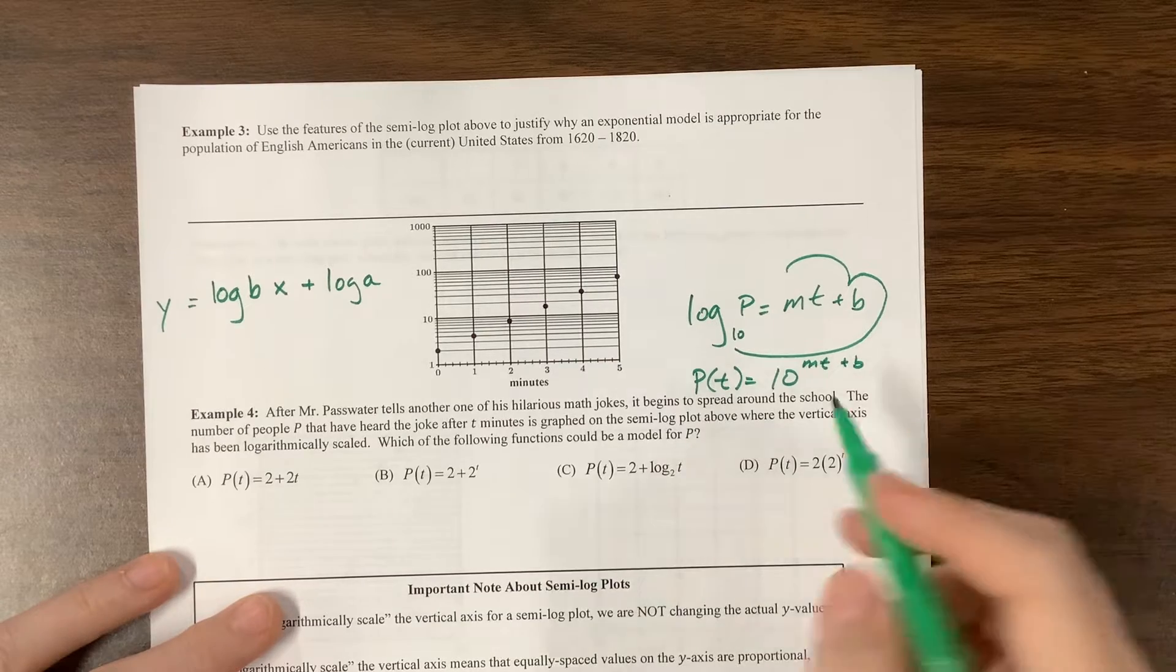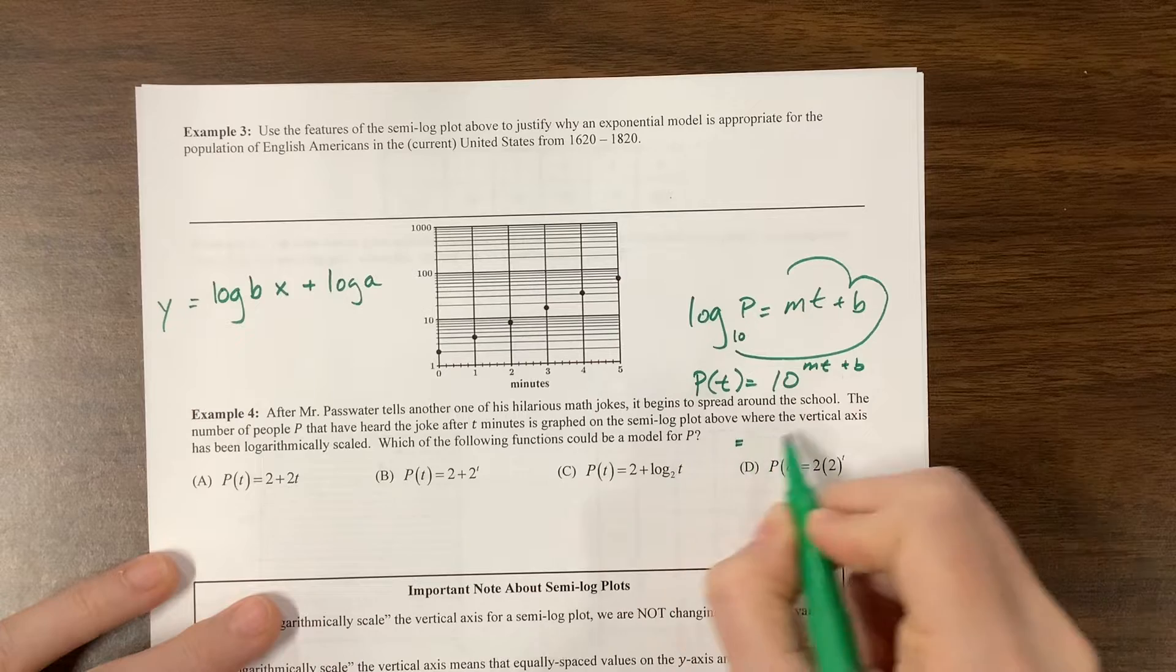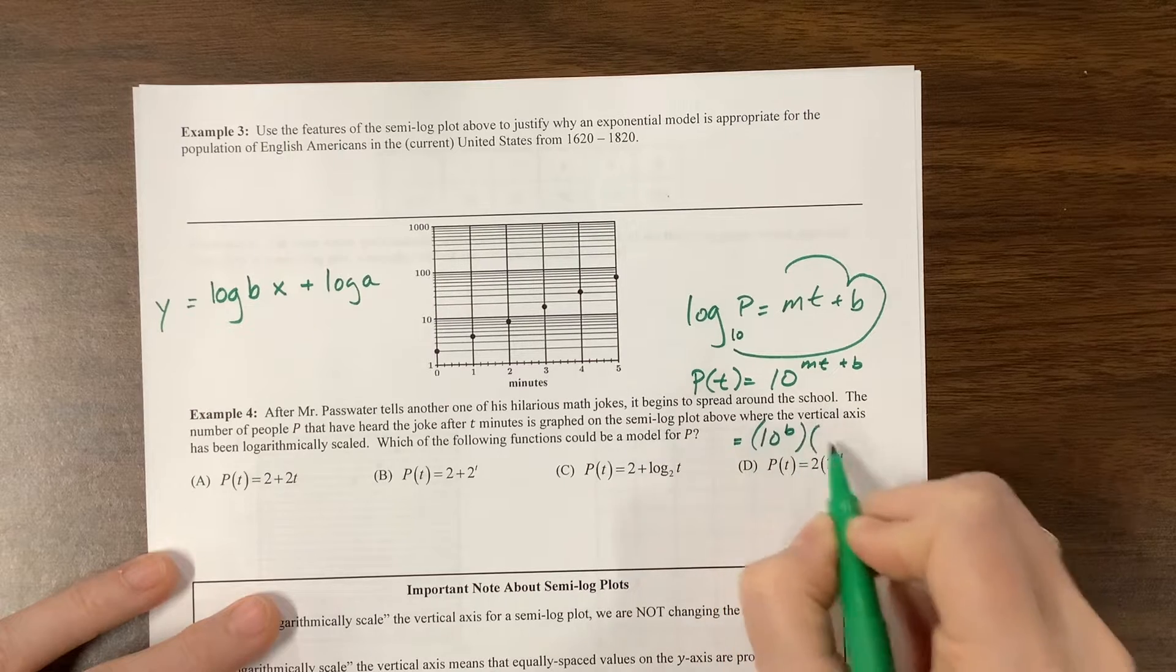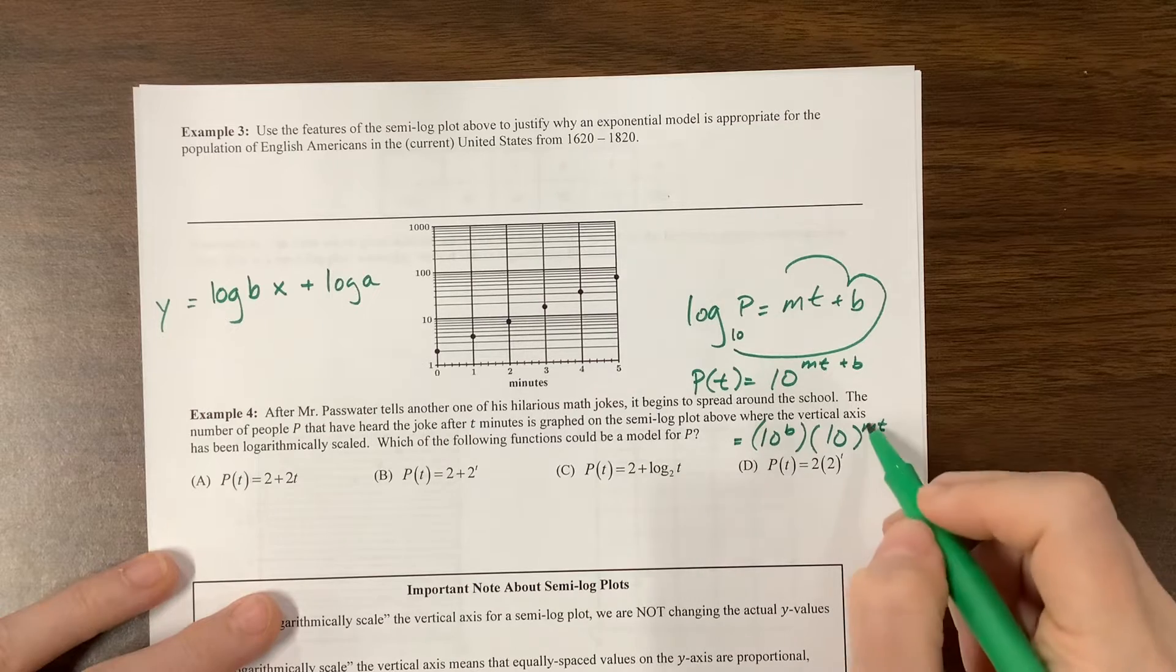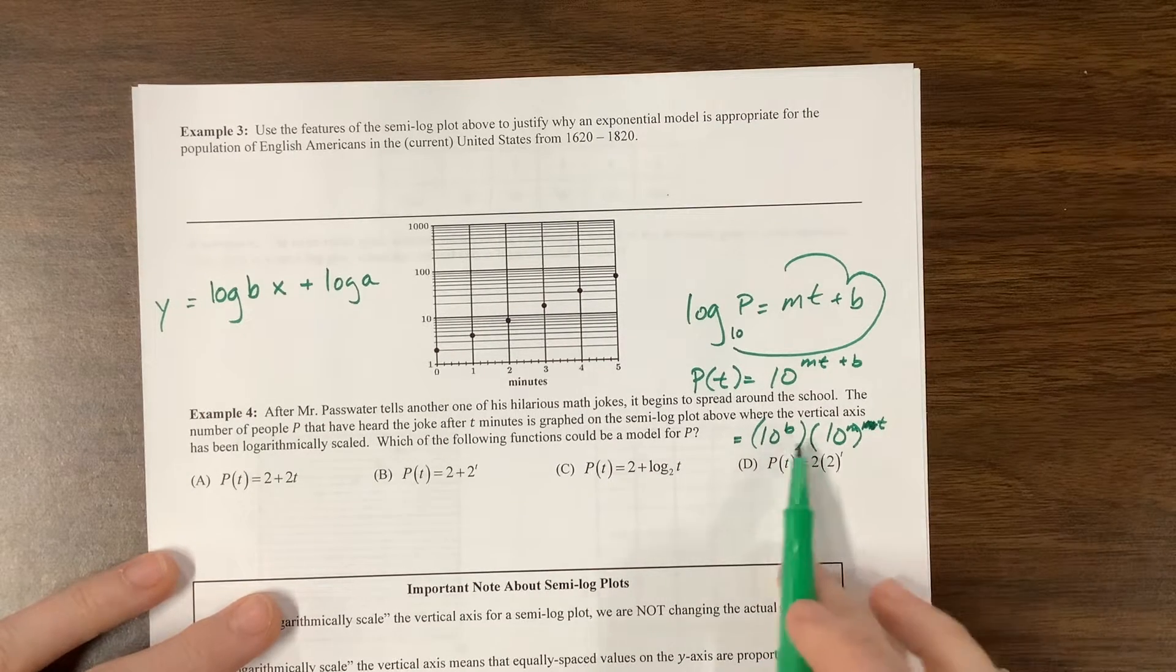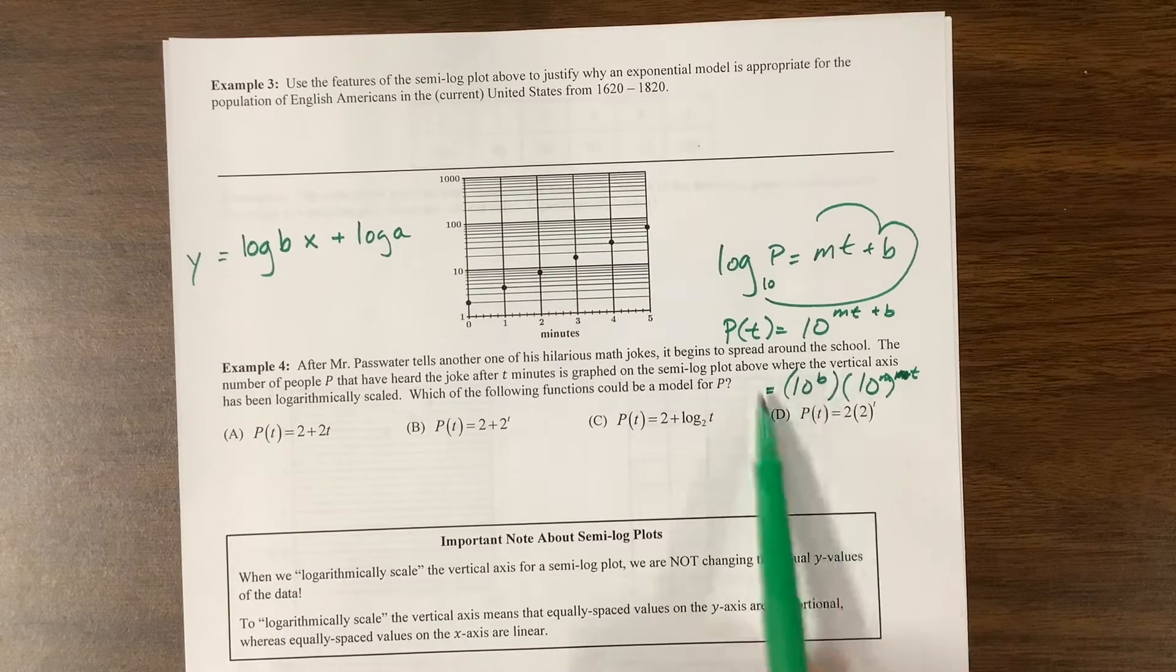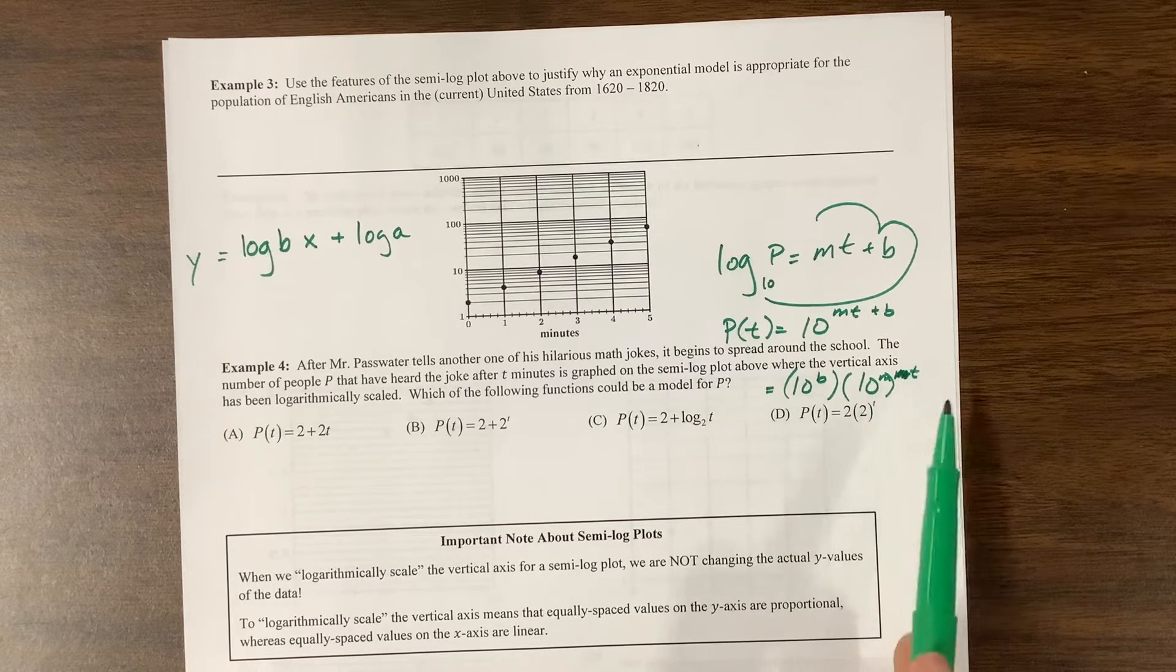So P of T is equal to 10 to some power like this. And if you remember, we can use our properties of exponents to say that it is, well, the constant would be 10 to the B times 10 to the M T. Or we could just write this as 10 to the, I could get rid of this M right here, put it here, and then raise it to the T. Notice, here's how I was able to kind of wrap my head around some of these. I have an initial amount times a growth factor to a certain power.